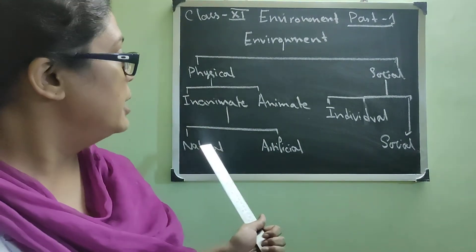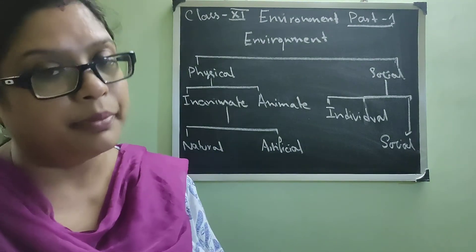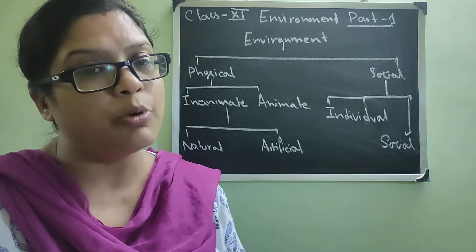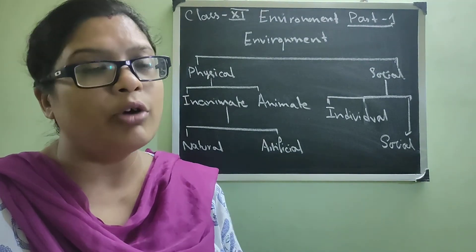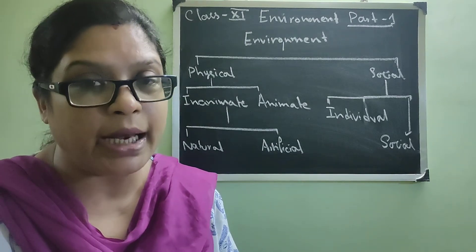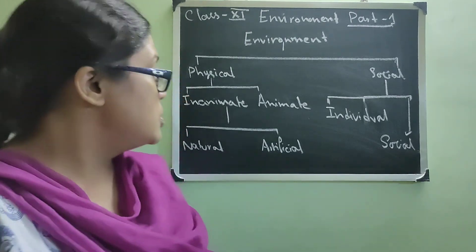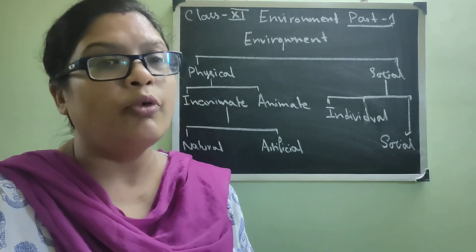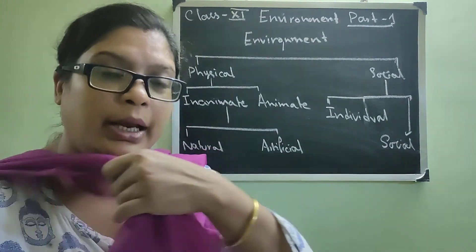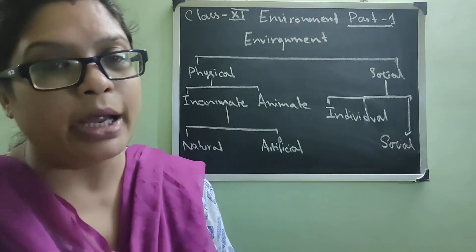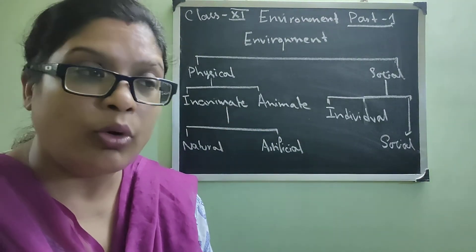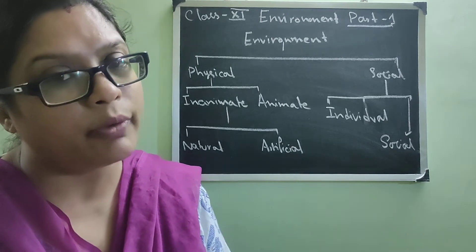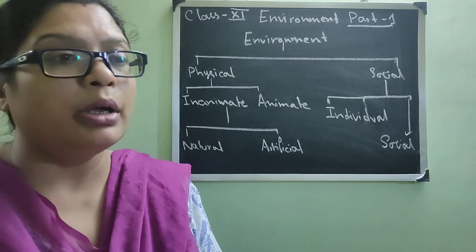And artificial environment means what? The artificial means something which we create, something which we develop. So artificial environment is the facilities what we are making or preparing to create a good environment like home, house, buildings, office, car, bus, tram, whatever we are using to go.